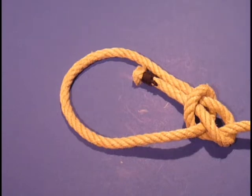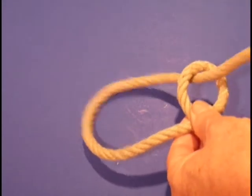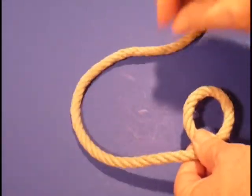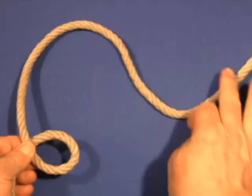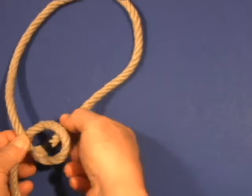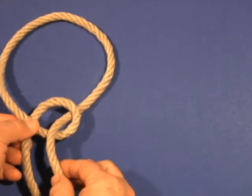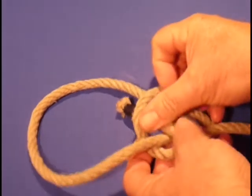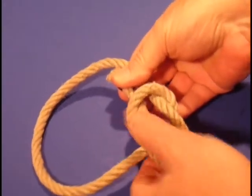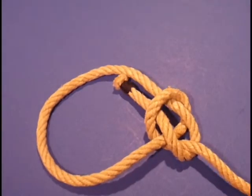The bowline is created in two different ways. One way is to make an eye or round turn, pass the running end through the round turn from the bottom, around the standing part and back in this eye. This creates the bowline.